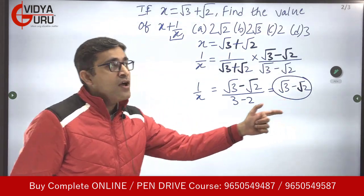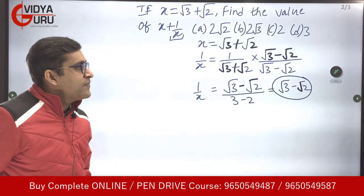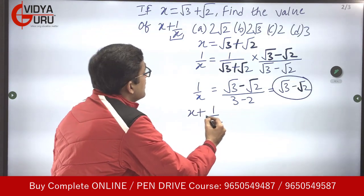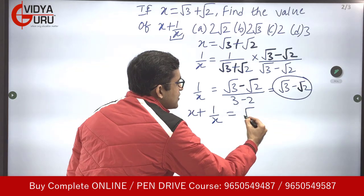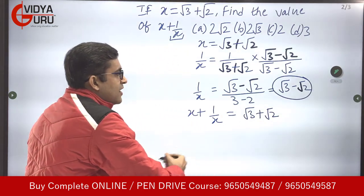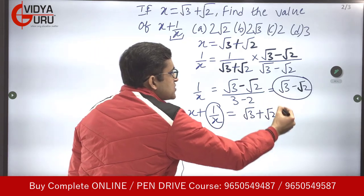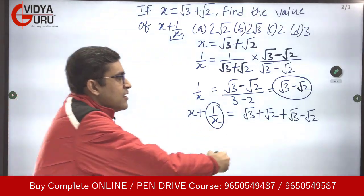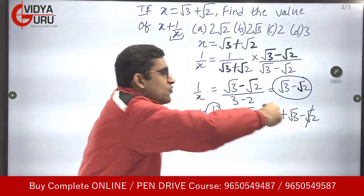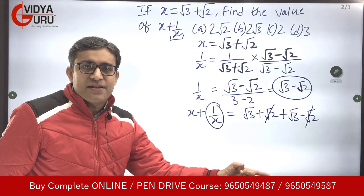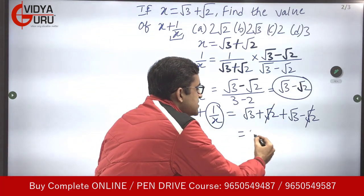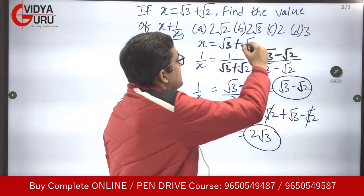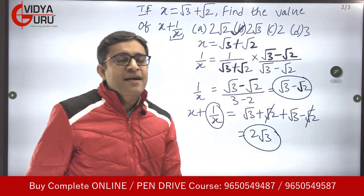Now we use this value to find x + 1/x. x is √3 + √2, and 1/x is √3 − √2. The √2 terms are of opposite signs and cancel each other out. So √3 + √3 gives us the answer 2√3. The answer is 2√3, which is option B — the correct answer.